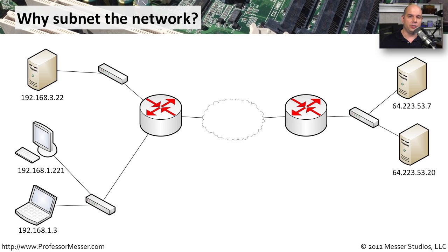Even very large organizations tend to keep their subnets relatively small. They'll generally have their subnets limited to about 253 devices or so. That makes it very easy to know exactly where someone might be and very easy to get traffic transferred from one place to the other using simple routers.